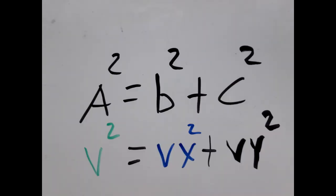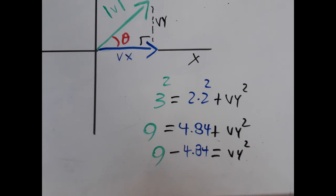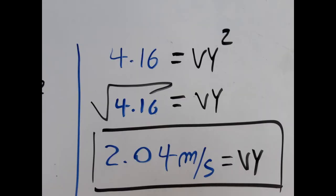Then we say that b square, the magnitude that we have, equals bx square, that's the x component of the velocity, plus by square, that's the one we want to find. We apply this theorem and replace with the numbers that we have. We use some algebra and we get that by square equals 4.16.